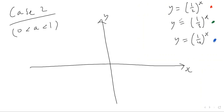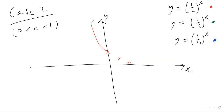Now let's look at the second case: y equals a number between zero and one, to the power of x. Starting with y equals one half to the power of x — plugging in x equals zero gives one, so it passes through (0, 1). Plugging in x equals one gives one half, and x equals two gives one quarter. So what you get with this one is an exponential decay graph.